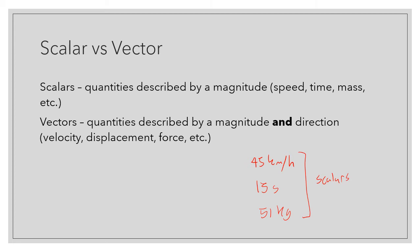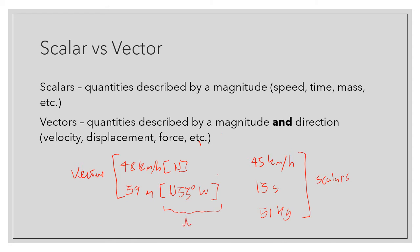A vector, on the other hand, is a quantity described by both magnitude and direction — such as velocity, displacement, force, and other quantities we will learn later in this course. For example, if the velocity of a car is 48 kilometers per hour north, that would be a vector. Or if the displacement is 59 meters north 55 degrees west, that would be a vector. The direction is written in square brackets, while the magnitude is out in front — whereas a scalar has only magnitude.